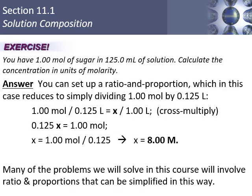Here's another example: if you have a 10 M solution, that means 10 moles per liter. If you only want 2 moles, how much volume do you need? Just think about it — if 1 liter contains 10 moles, then to get 2 moles you only need one-fifth of a liter.